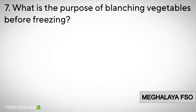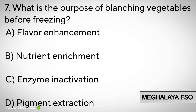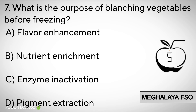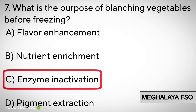Question number seven. What is the purpose of blanching vegetables before freezing? A. Flavor Enhancement, B. Nutrient Enrichment, C. Enzyme Inactivation, D. Pigment Extraction. Correct answer: C. Enzyme Inactivation.